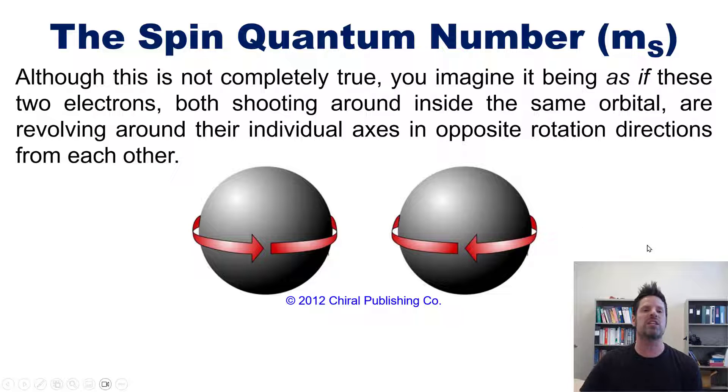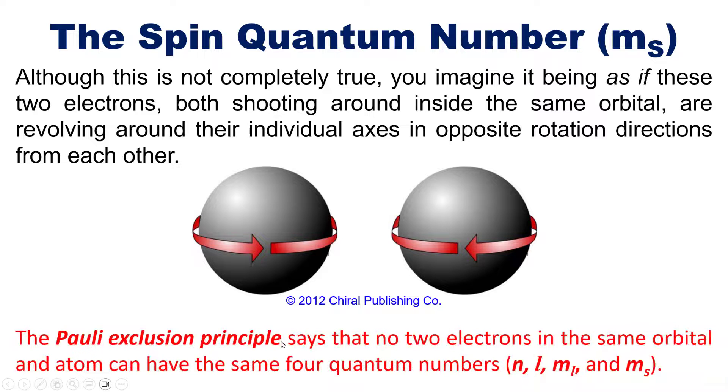Why is this important? Because of something called the Pauli Exclusion Principle. The Pauli Exclusion Principle says that no two electrons in the same orbital and atom can have the same four quantum numbers. By virtue of having a spin number, two electrons that occupy the same orbital can still have a different set of four quantum numbers, because one will be a plus spin and the other will be a minus spin.